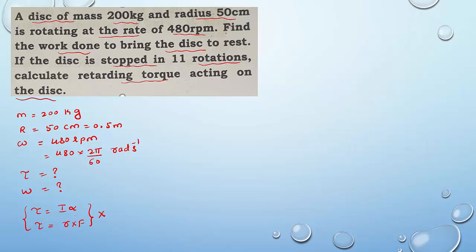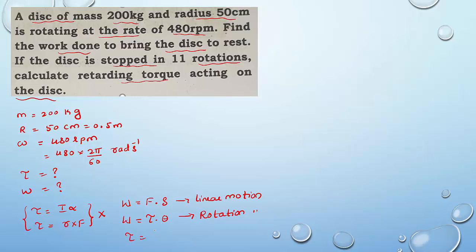So we go for other equations. Work done is generally given by W = F·s for linear motion. For rotational motion, this becomes W = τ·θ. So we can write τ = W/θ. We can use this equation because theta is given — the disk is stopped in 11 rotations. So θ = 11 × 2π radians.